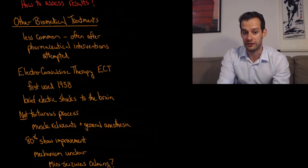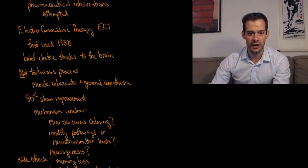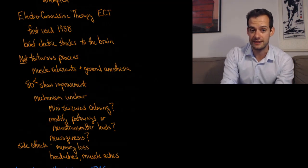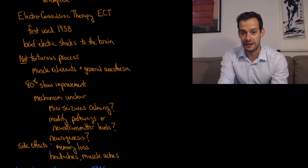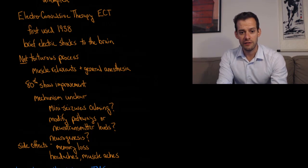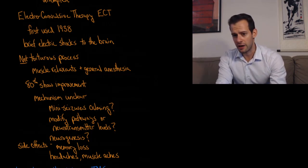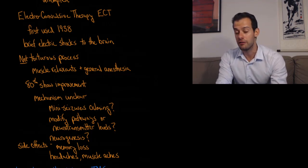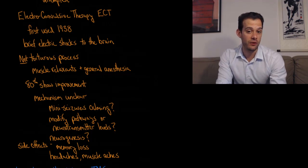If nothing's working in these cases, then it's possible they might try one of these other biomedical interventions. The first of these is electroconvulsive therapy, or ECT. This was first used in 1938 and it involves delivering very brief electric shocks to the brain. There's a misconception or misperception of this process that people might have, particularly if they've seen movies like One Flew Over the Cuckoo's Nest.